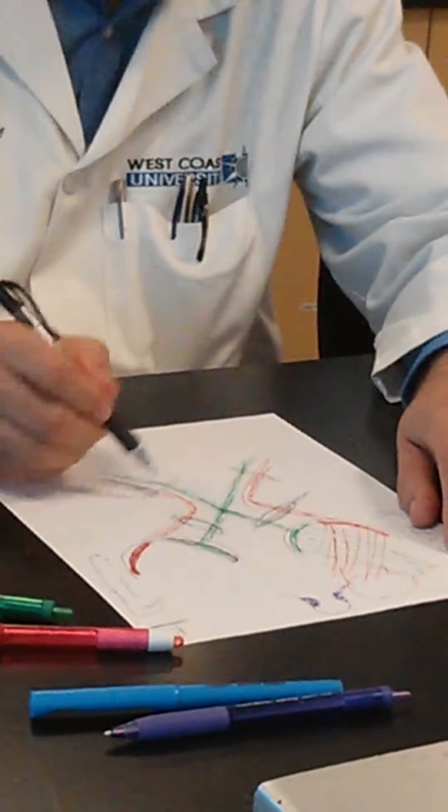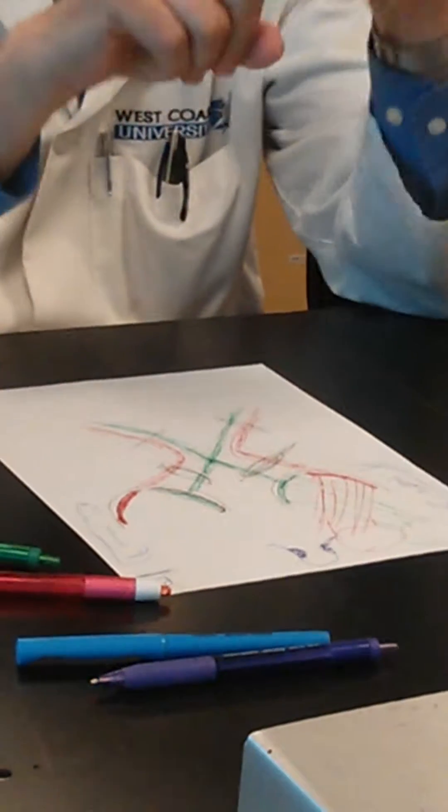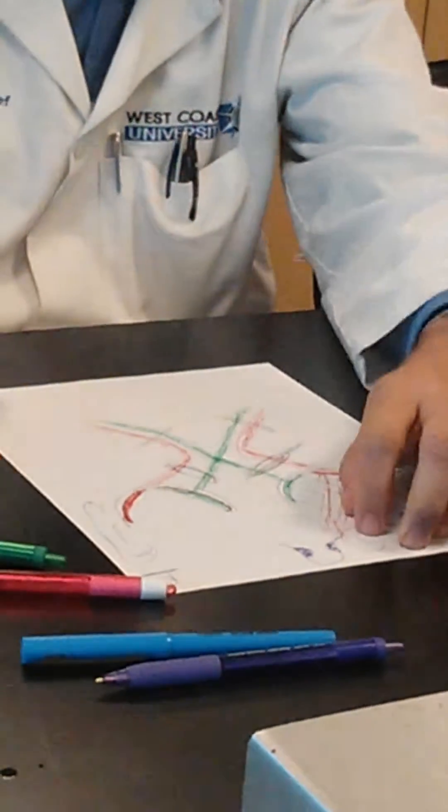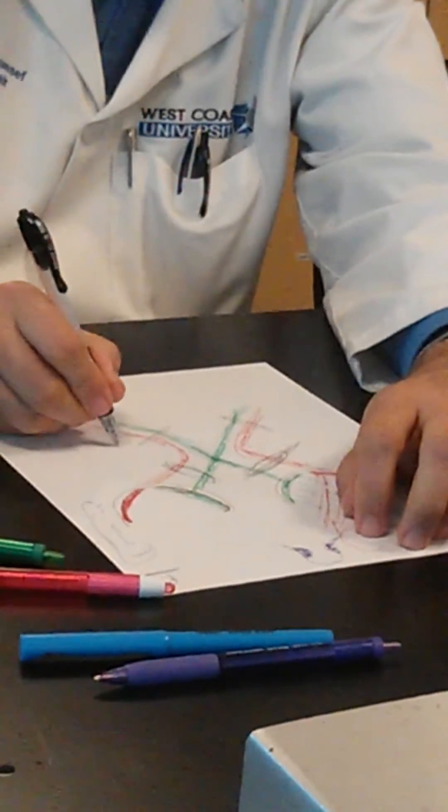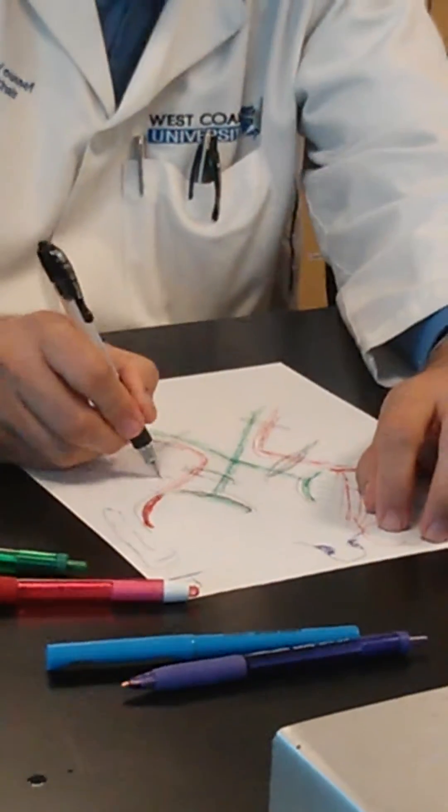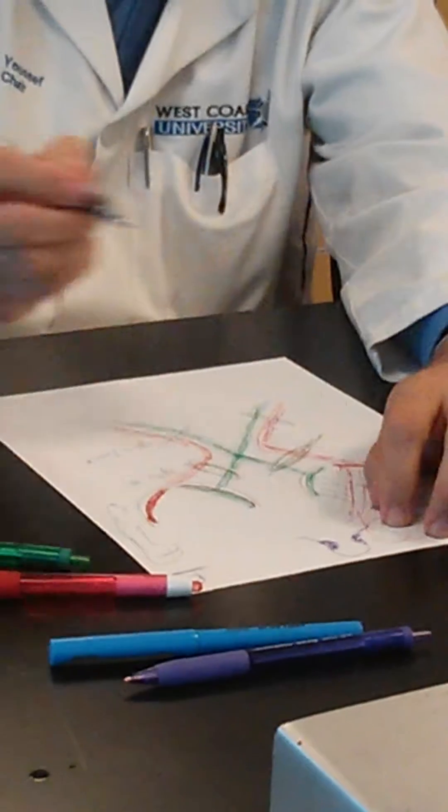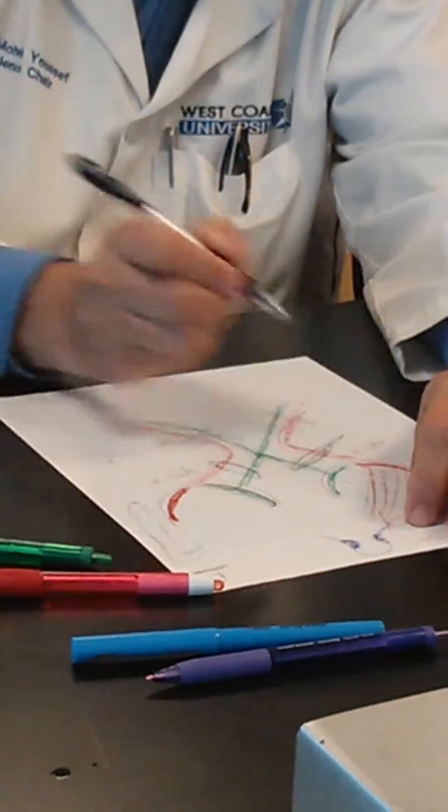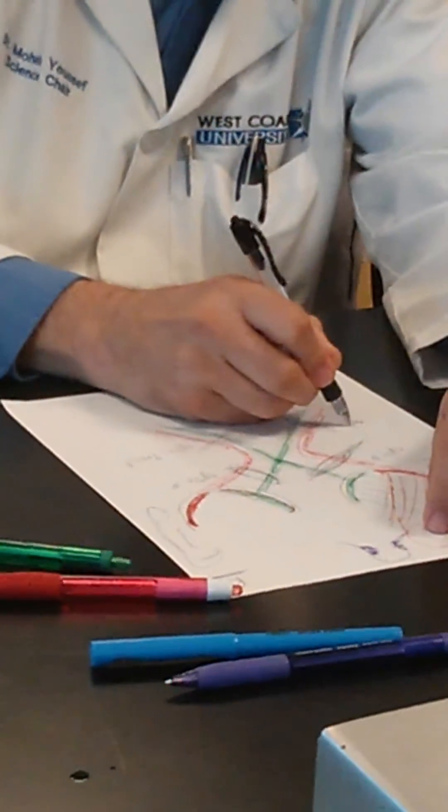Let's say the lesion is here. We said these are the optic nerves - what are these? The optic tracts. So let's put names here: optic tract, optic nerve, optic nerve, optic tract.